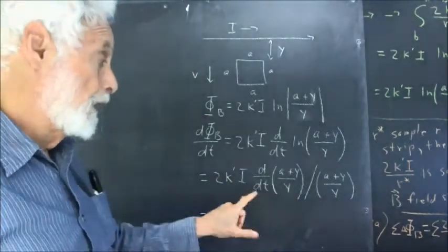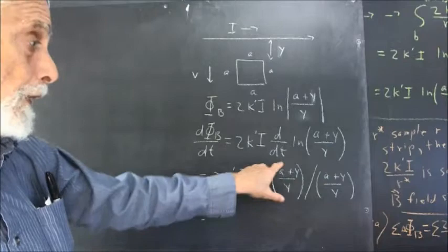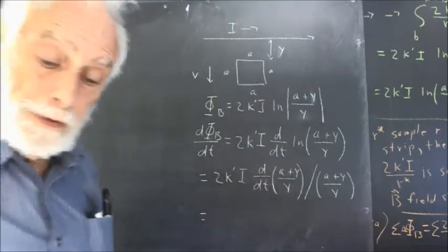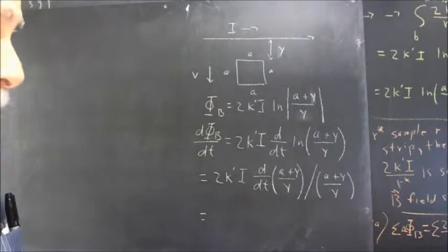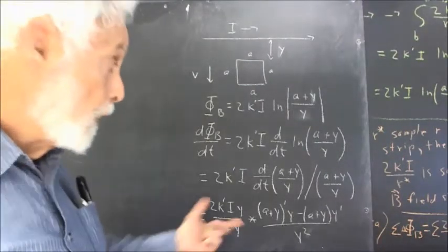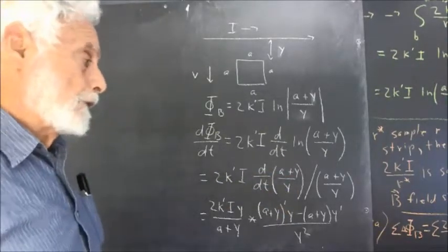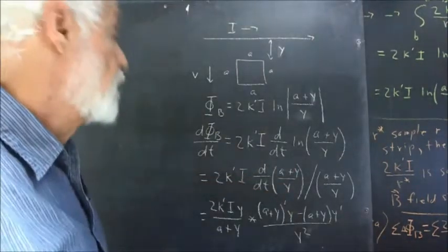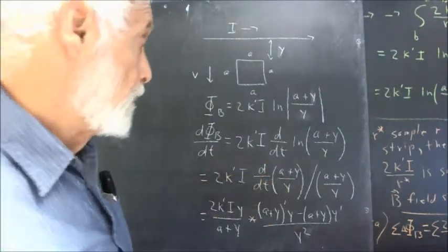So here it is. We've got everything except the derivative of (a + y) over y with respect to t. See if you can make some progress on that. I would go to the quotient rule to take this derivative. Remember that y is the only thing that has a change, so y is the only thing we need to take a derivative of.